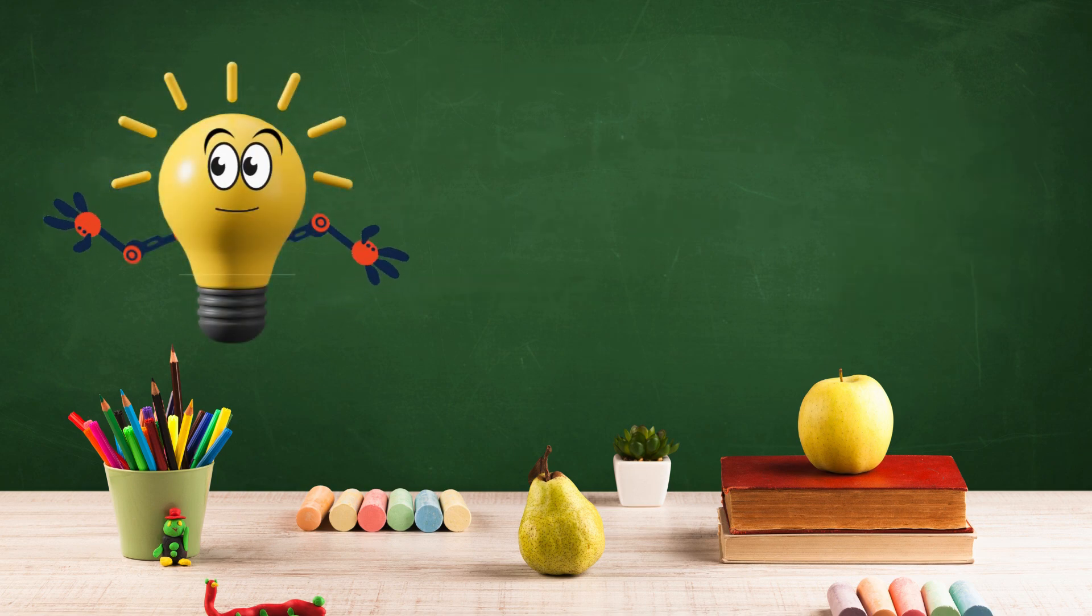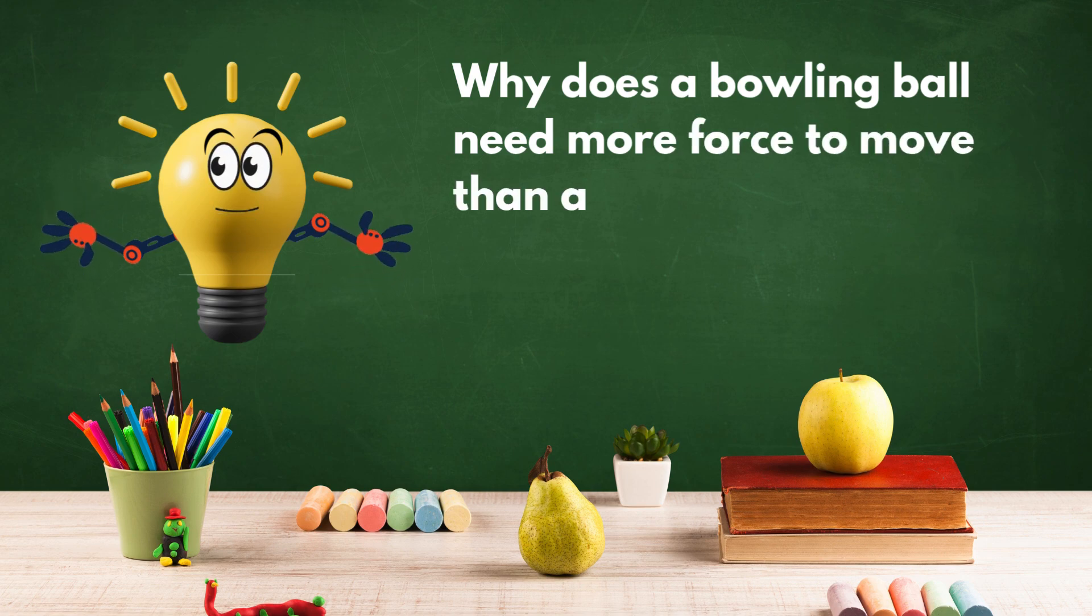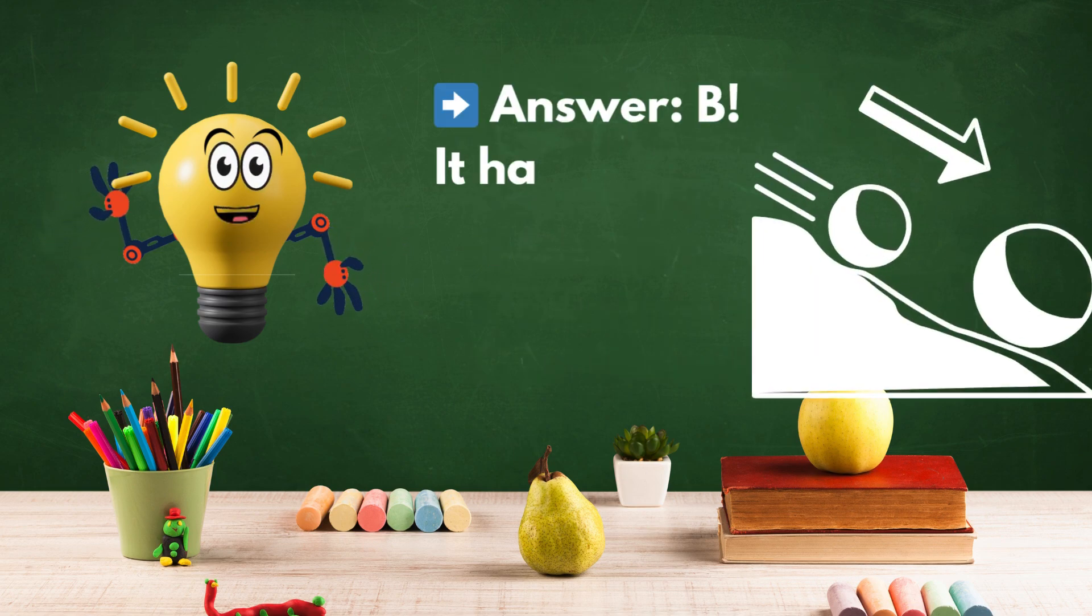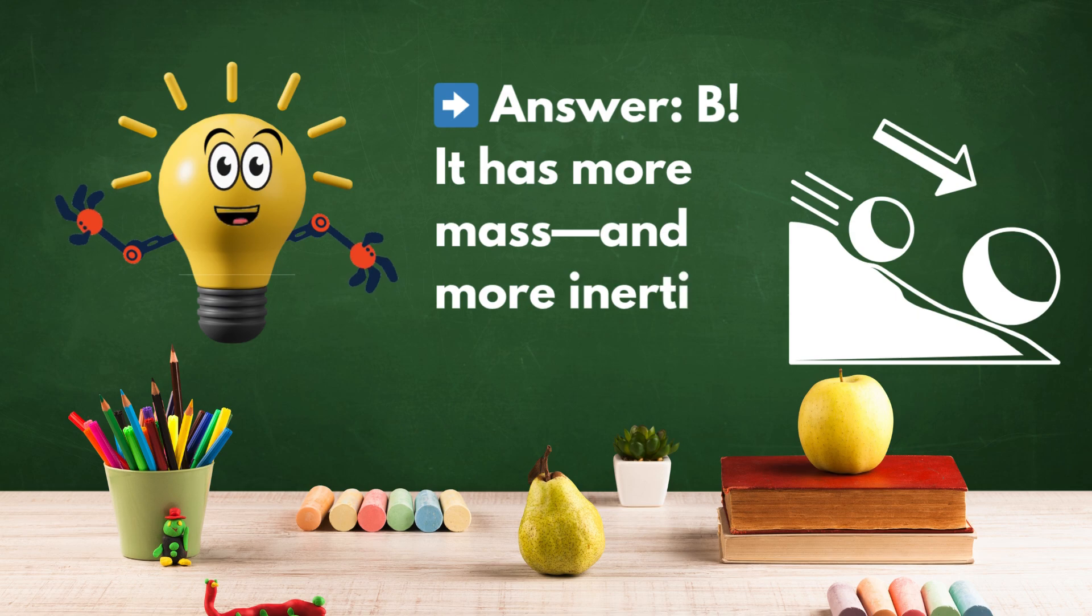Question 2: Why does a bowling ball need more force to move than a tennis ball? A. It's round. B. It has more mass. C. It rolls better. Answer: B! It has more mass and more inertia.